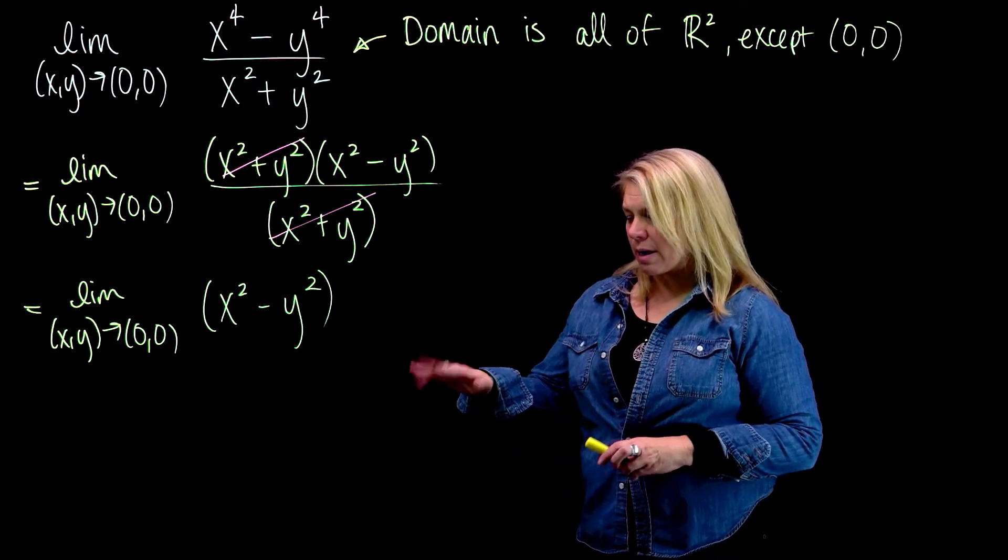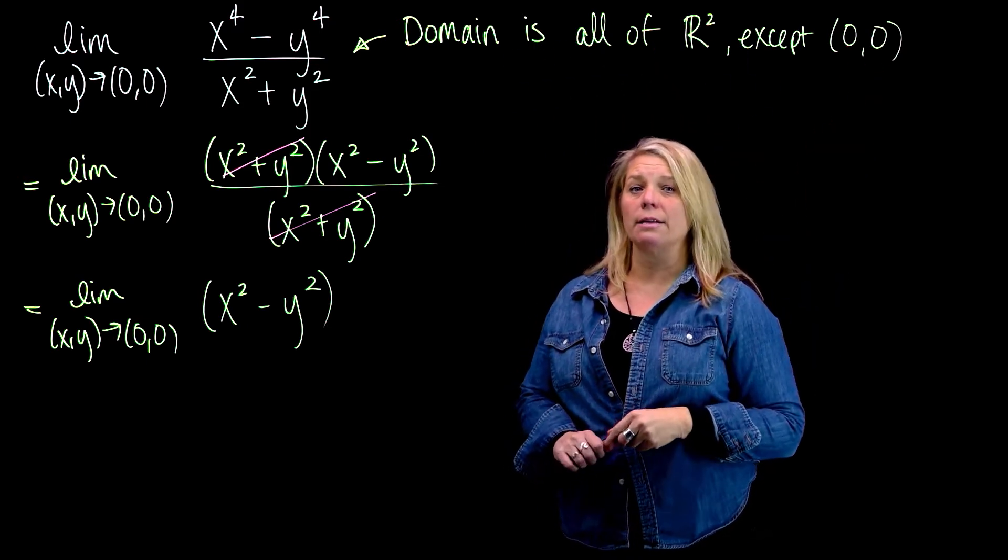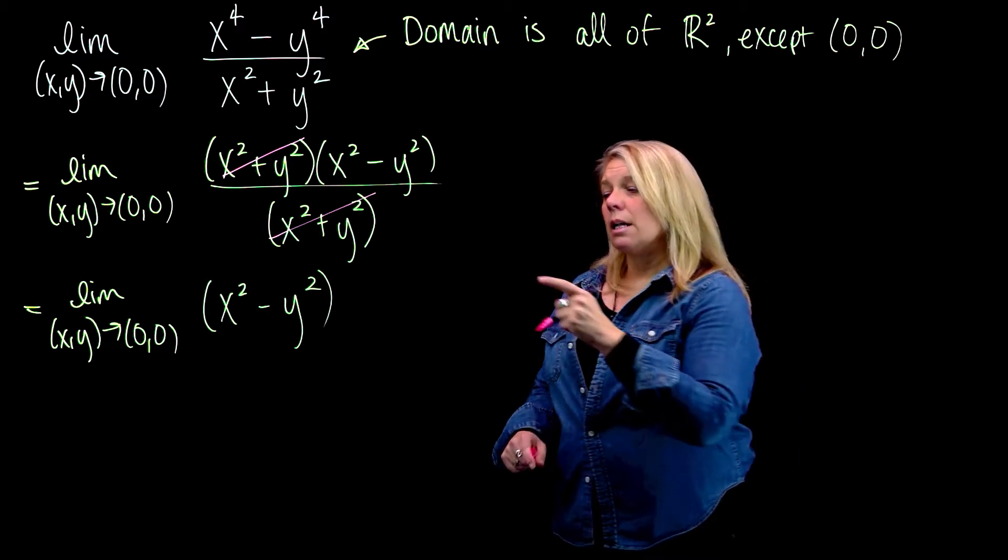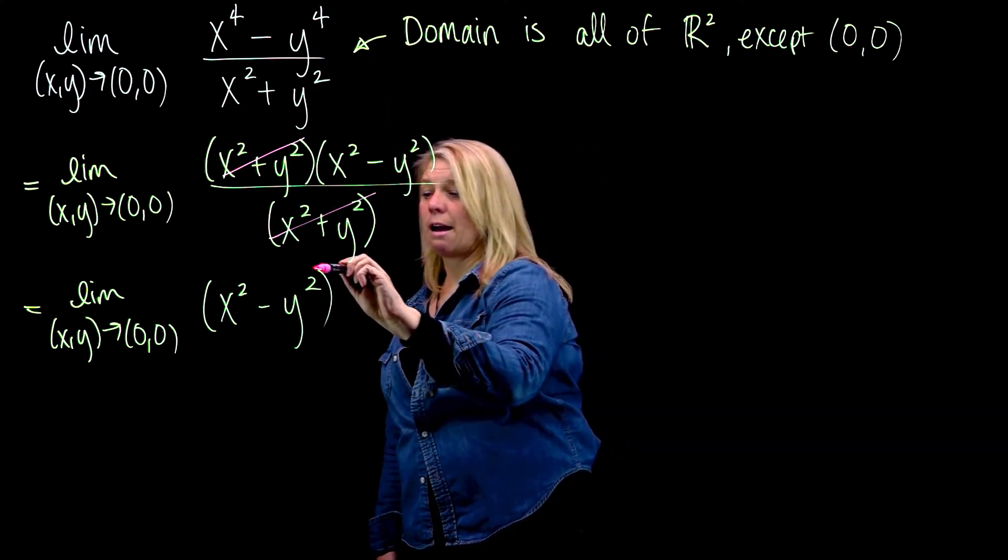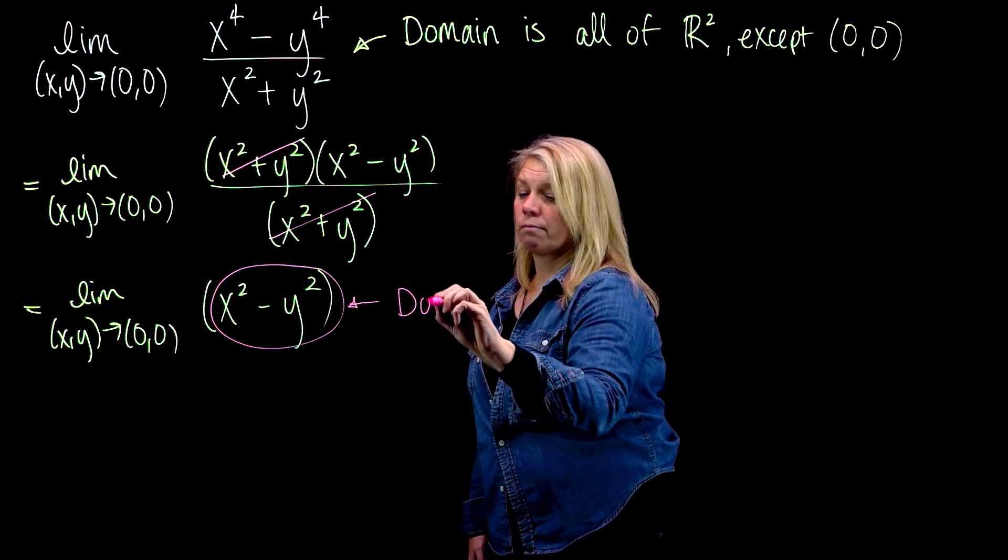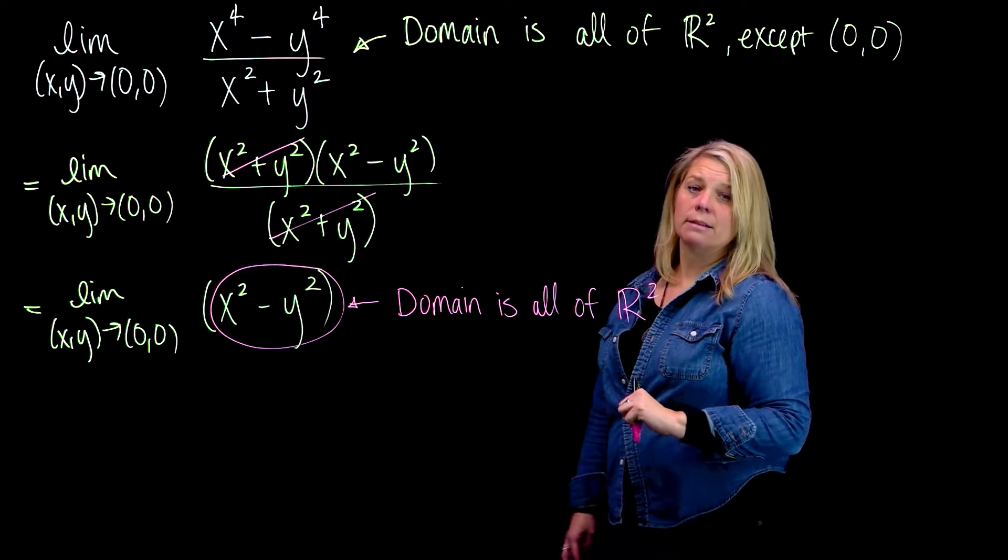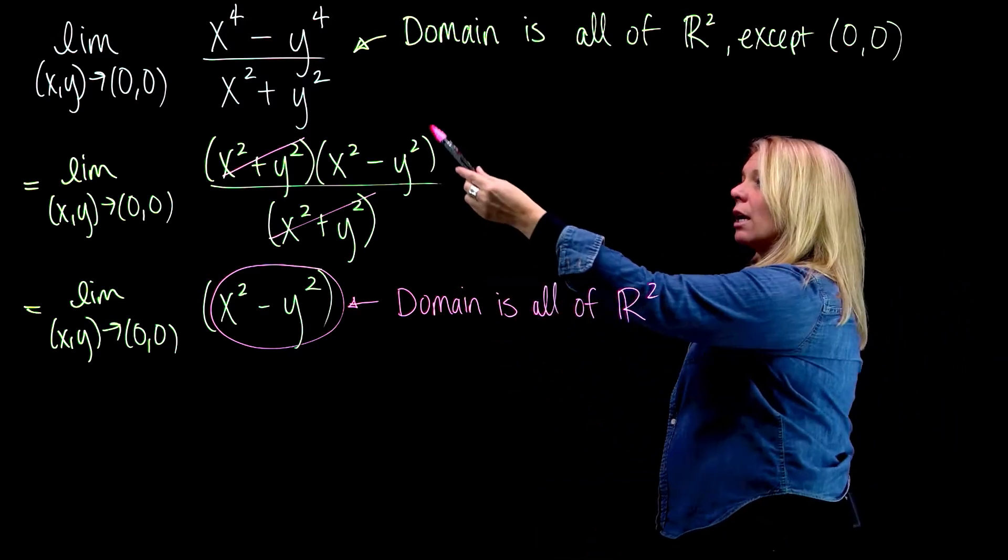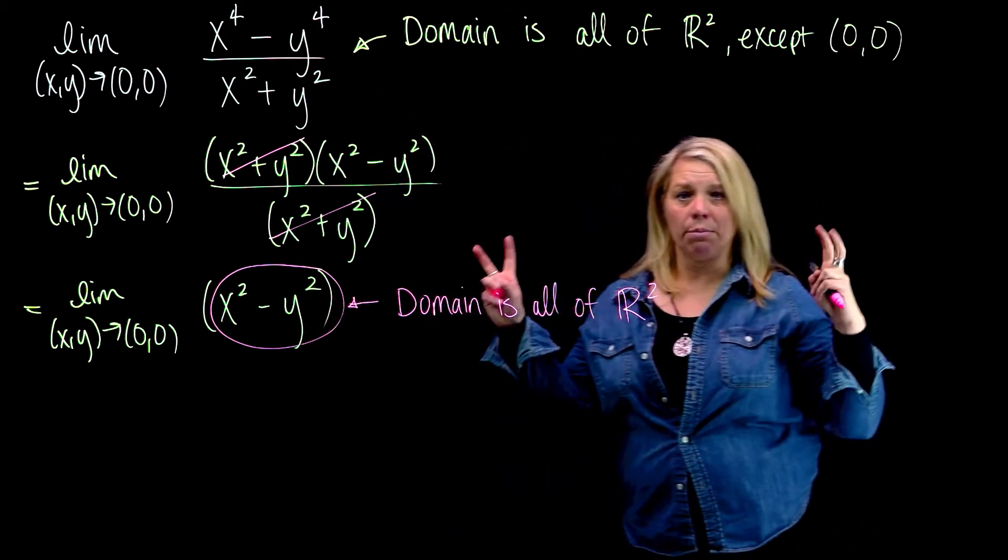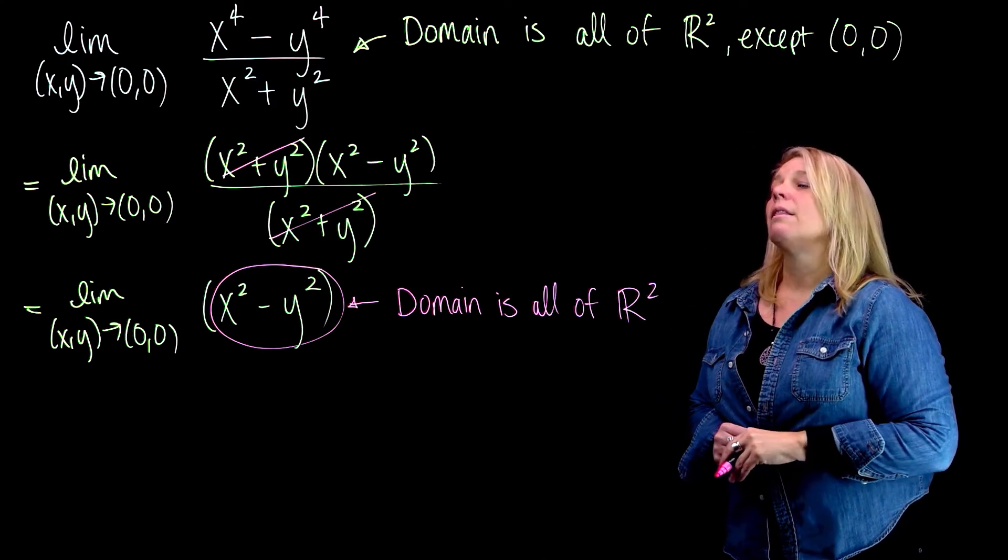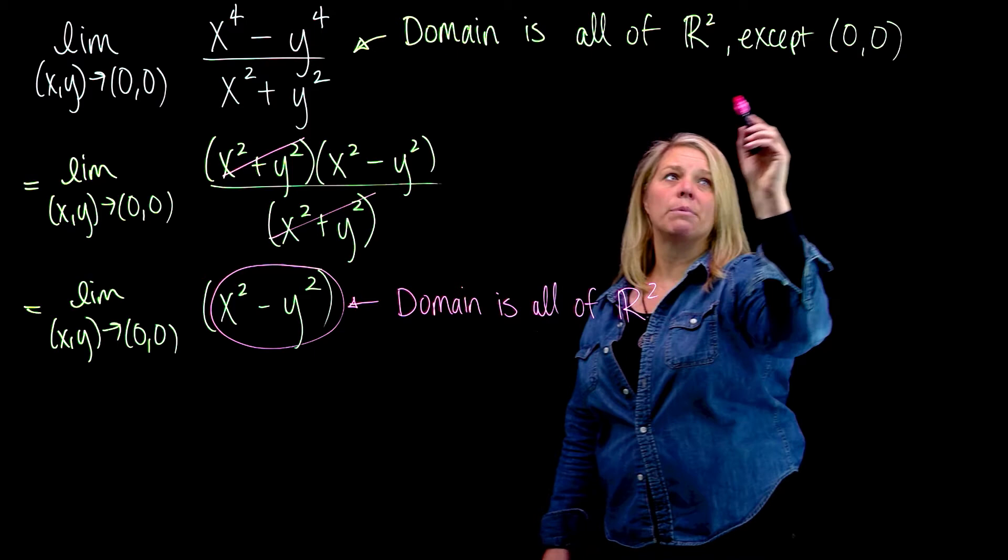A couple things I want to point out. We're almost ready to find the answer for this limit question. One is that the original function has a domain that's all of R² except the origin. This function that I have here is not the same as the original function. This function now has a domain that is all of R². If they have different domains, then they are not the same function. But as we get close to the origin, these two functions have the same limit. It's important to understand that this original function and this simplified version are not really the same function. They are the same everywhere except any place that would make this factor zero, so these two functions are the same everywhere except at the origin.